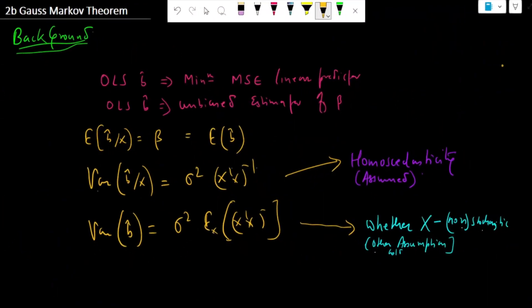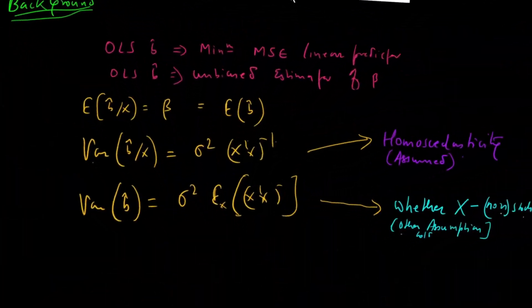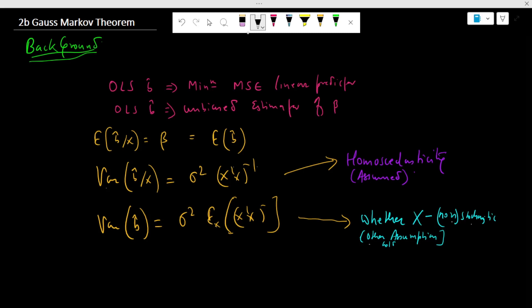Hello, welcome to Econometrics Melody. In this video, we'll discuss the Gauss-Markov theorem. We know that the OLS beta estimate yields a minimum mean squared error linear predictor. Similarly, the OLS beta estimate is an unbiased estimator of the population beta, because the conditional and unconditional expected value of the OLS beta estimate is equal to the population beta.